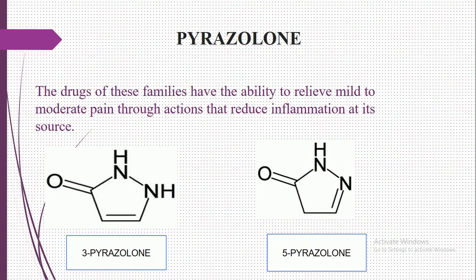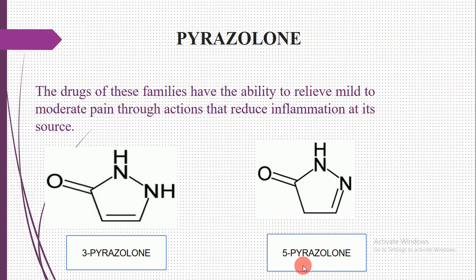The second group is called pyrazolones. Drugs of the pyrazolone family have the ability to reduce mild to moderate pain through actions that reduce inflammation at its source. Here is the structure of pyrazolone, and this is 5-pyrazolone — note the structure and structure-activity relationships, as the number of atoms differs between them.